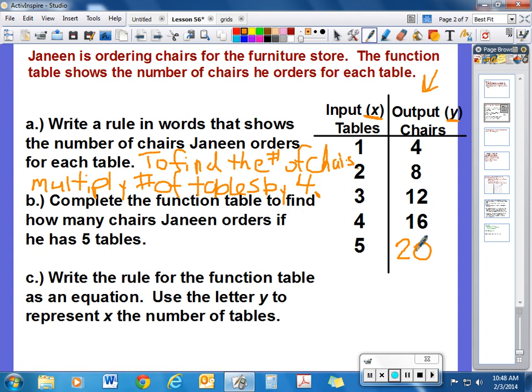Now we are going to write the rule for the function table as an equation. We are going to use the letter y to represent the chairs and x to represent the number of tables. So if we don't know how many chairs there are, we are going to write it kind of like our word problem here in part A. So to find the number of chairs, to find y, we are going to take four times x. Or you could write it 4x equals y, either way. That would be a right way to write the equation to fit the function table.